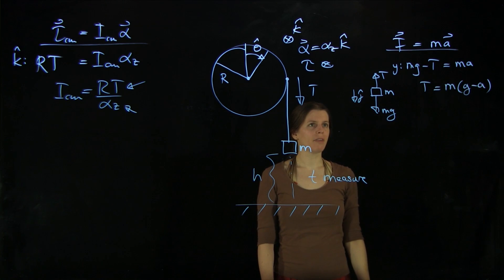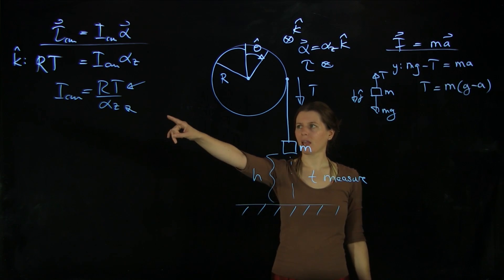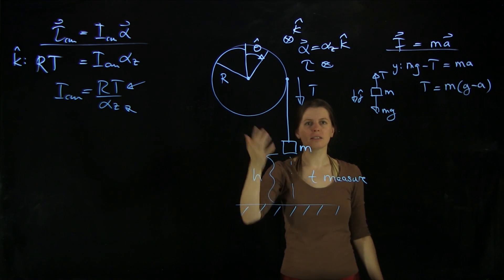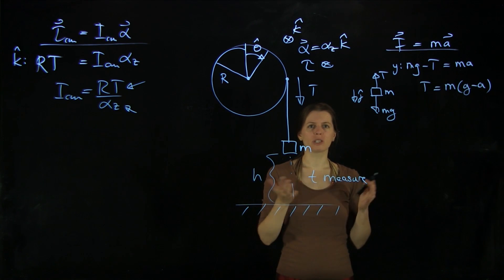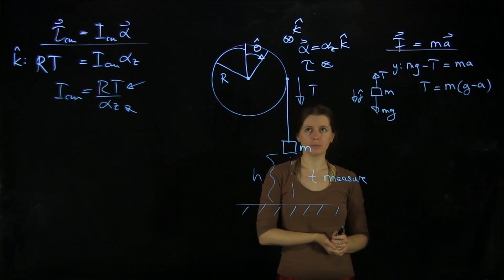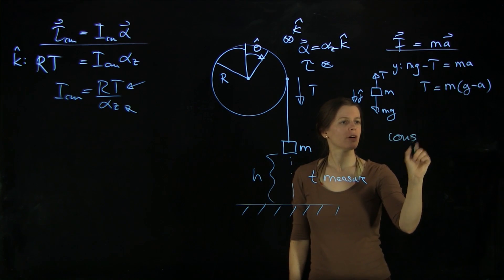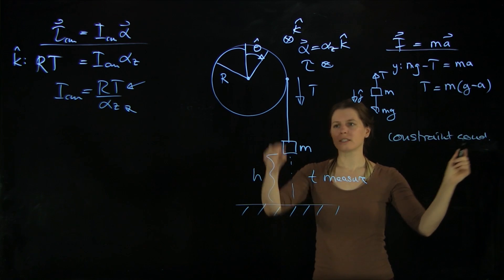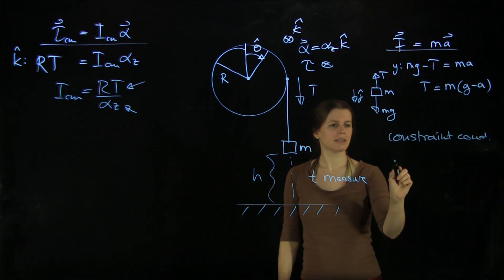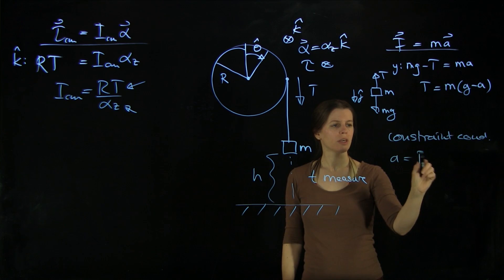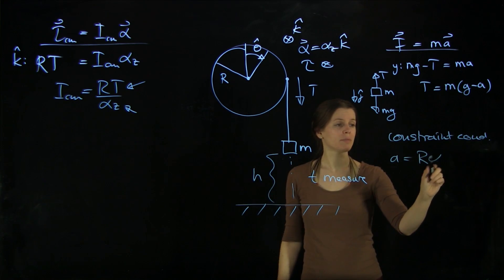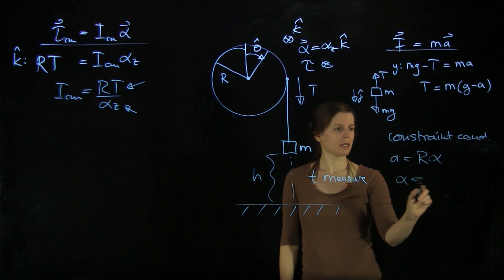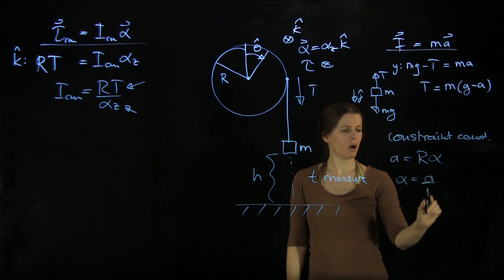Good. So we have that now about the angular acceleration. And whenever there's a string going around a disk, then we have a constraint condition. Because the linear acceleration of this little mass going down is related to the radius of the disk times the angular acceleration. So we can solve this for alpha = a over r.